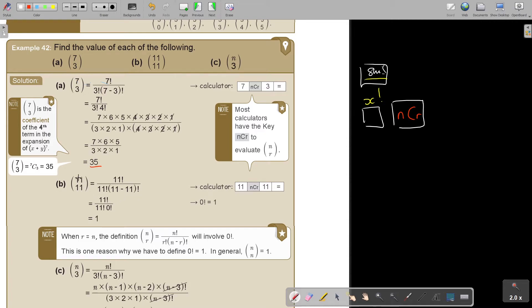Let's calculate this, to evaluate this. 11, 11, it's 1. But if you have to, 11 minus 11. And remember that 0 factorial is 1. It's actually not to give you division by 0. When R is N, the definition NR will involve 0. This is one reason why I have to define 0 factorial as 1. In general, NN is 1.